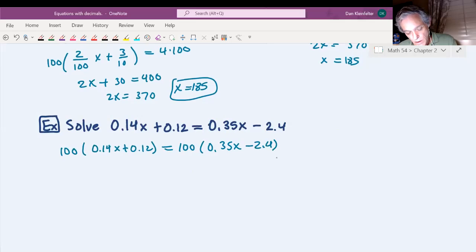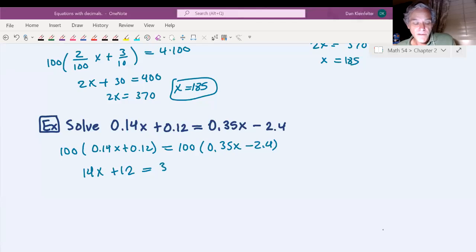Some people don't like to show this step. So this moves the decimal point over two places to the right, giving us 14x plus 12. On the right side, we'll have 35x minus 240. So we've moved the decimal point over two places. So from here, it should be hopefully pretty routine.